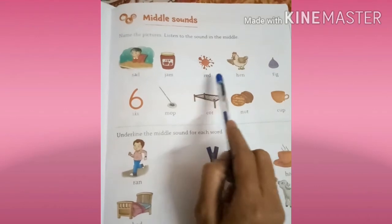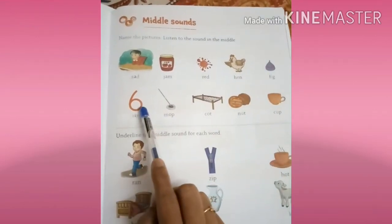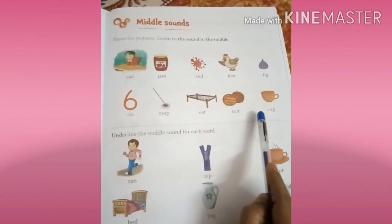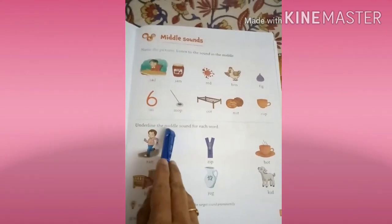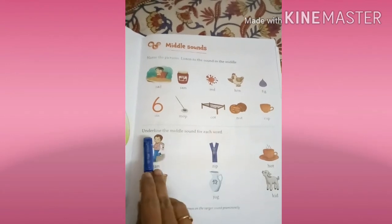S-A-D sad, J-A-M jam, R-E-D red, H-E-N hen, F-I-G fig, S-I-X six, M-O-P mop, C-O-T cot, N-U-T nut, C-U-P cup. Underline the middle sound for each word, okay. Underline the middle sound for each word.